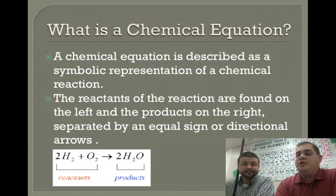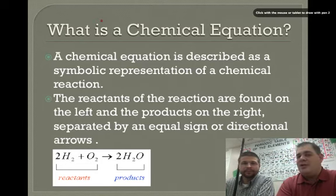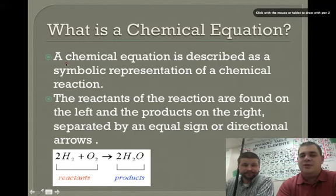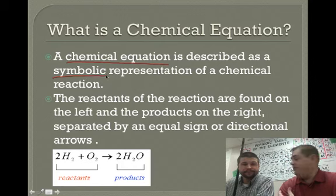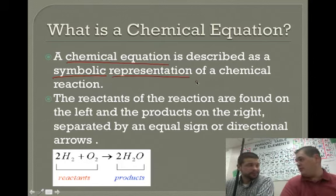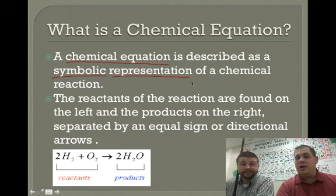So a chemical equation is just described as a representation of the reaction that's taking place. We're going to practice writing these equations. It's kind of like what's in that picture down there. It's a representation of just what is happening using those chemical symbols from the periodic table and using the chemical formulas that we've learned how to write.